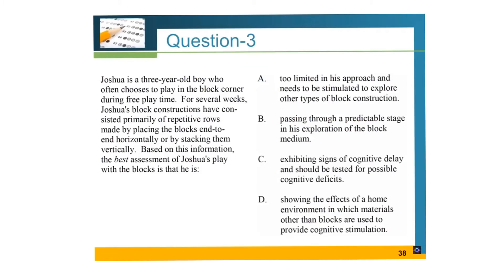Question number three: Joshua is a three-year-old boy who often chooses to play in the block corner during free play time. For several weeks, Joshua's block constructions have consisted primarily of repetitive rows made by placing the blocks end to end horizontally or by stacking them vertically. Based on this information, the best assessment of Joshua's play with the blocks is that he is: A) too limited in his approach and needs to be stimulated to explore other types of block construction; B) passing through a predictable stage in his exploration of the block medium; C) exhibiting signs of cognitive delay and should be tested for possible cognitive deficits; D) showing the effects of a home environment in which materials other than blocks are used to provide cognitive stimulation.